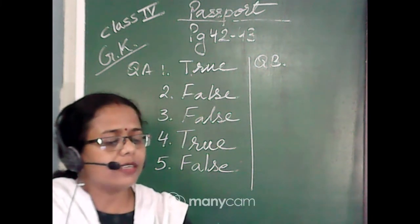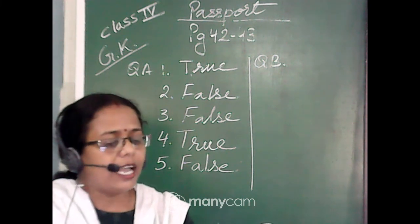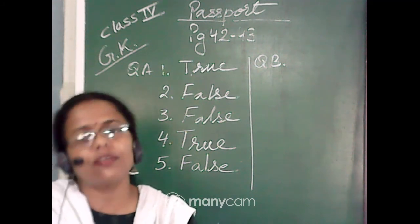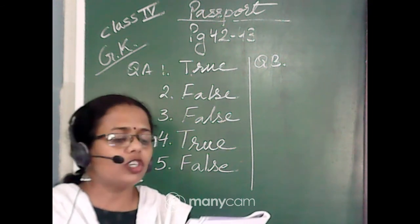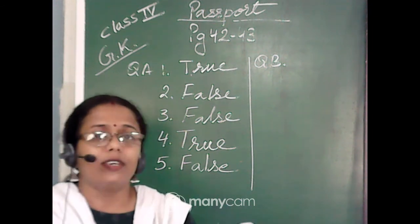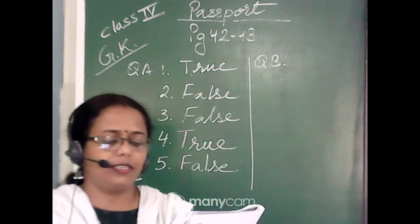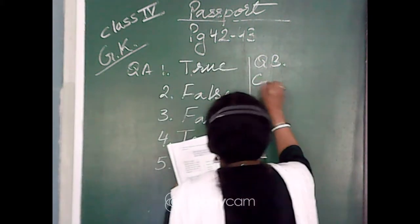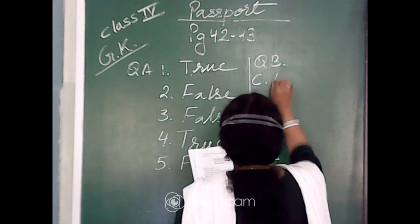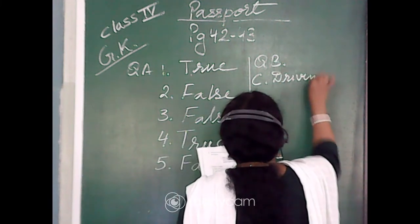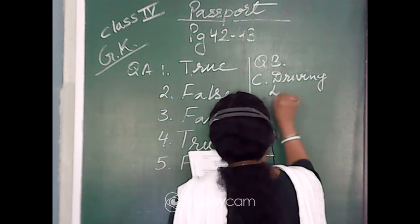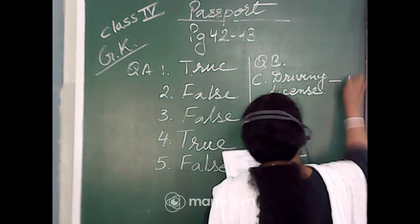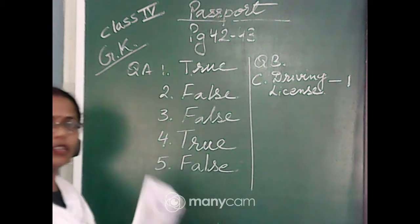Number one: 'This card has a person's photograph on it and it permits one to drive motor vehicles.' To drive your motor vehicles, you need one permission along with a photograph — that is known as a driving license, which is option C. So the first one, driving license, is matched with C.